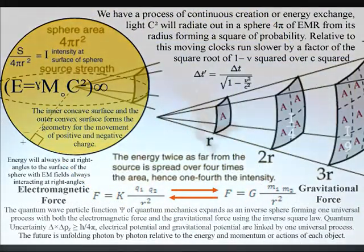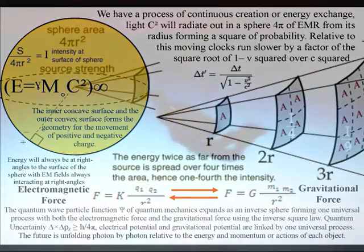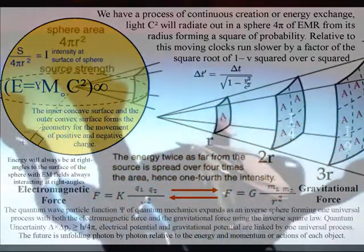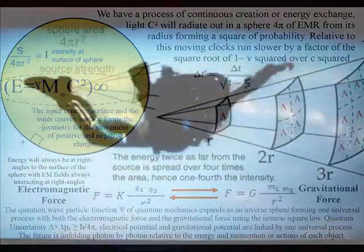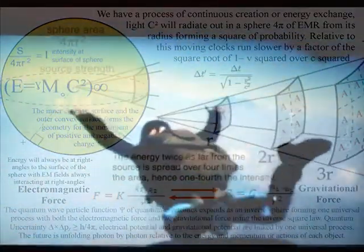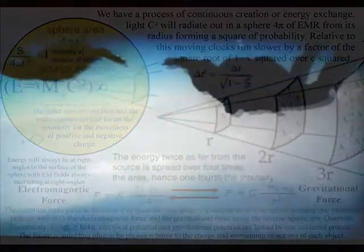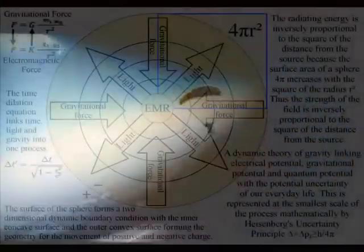This dynamic process can be represented mathematically with electromagnetism and gravity sharing the inverse square law, representing the geometry of this universal process with gravitation being a secondary force to electromagnetism.